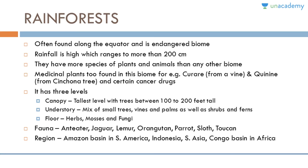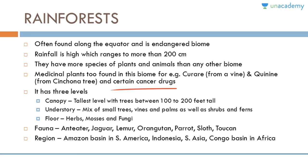The rainforest biome is often found along the equator and is an endangered biome. Rainfall is high, exceeding 200 centimeters. Rainforests have more species of plants and animals than any other biome, and medicinal plants are found here — for example, curare from a vine and quinine from the cinchona tree, along with certain cancer drugs. The rainforest has three levels: the canopy with trees 100 to 200 feet tall, the understory of small trees, vines, palms, shrubs, and ferns, and the floor where herbs, mosses, and fungi are found. Animals include anteater, jaguar, lemur, orangutan, parrot, sloth, and toucan. The region of rainforest includes the Amazon Basin in South America, Indonesia, South Asia, Congo Basin, and Africa.